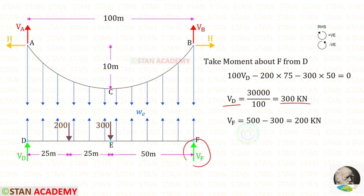To find VF we have to subtract VED from the total load. The total load is 200 plus 300, so it will be 500. For VF we will get 200 kilonewton.